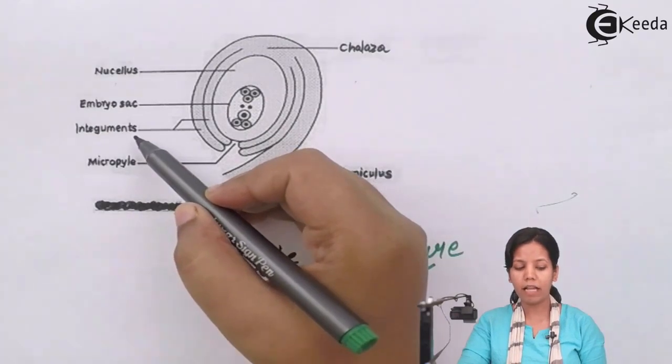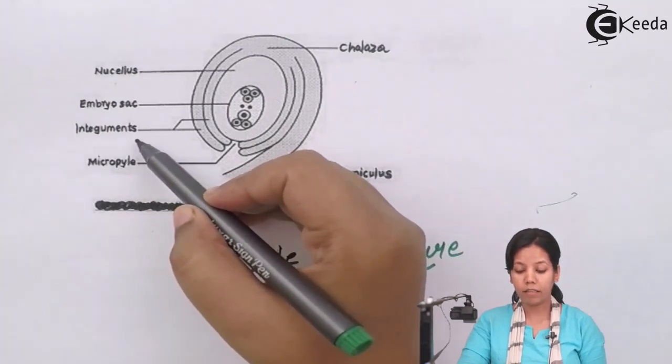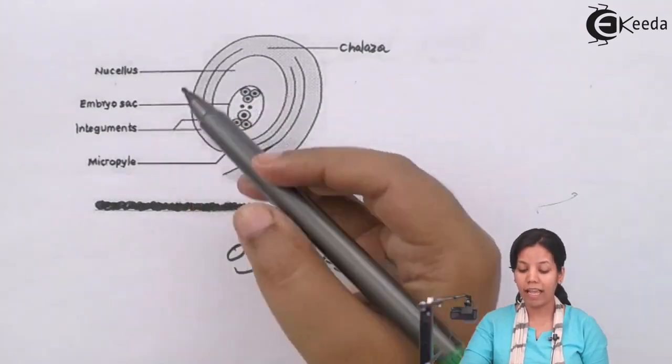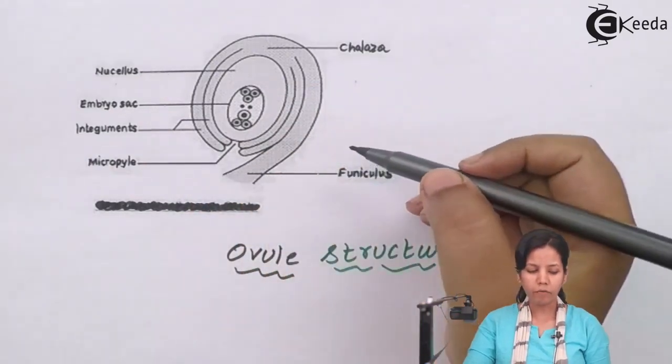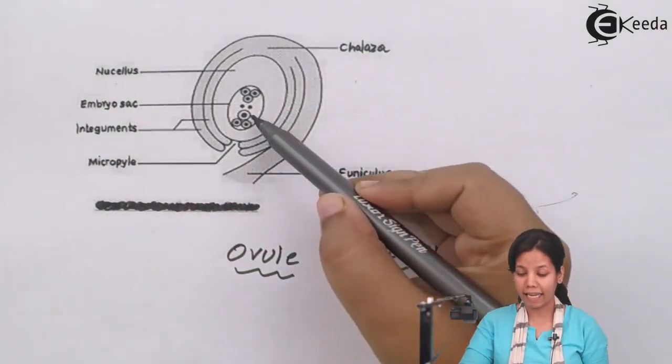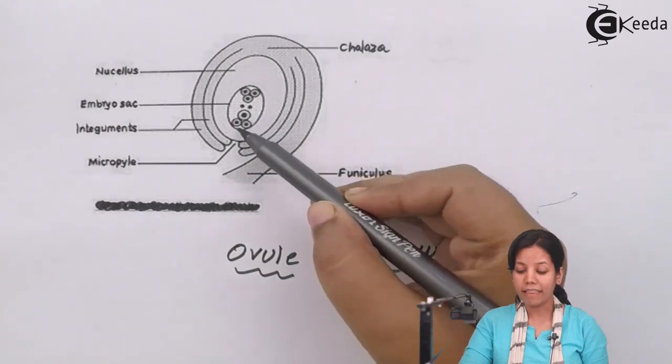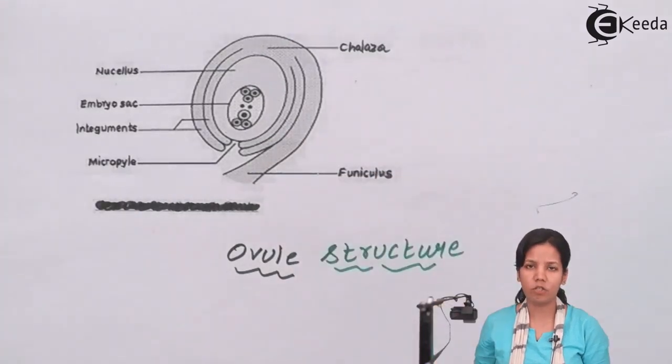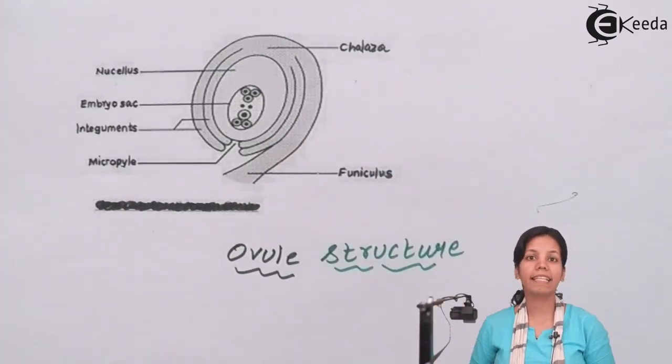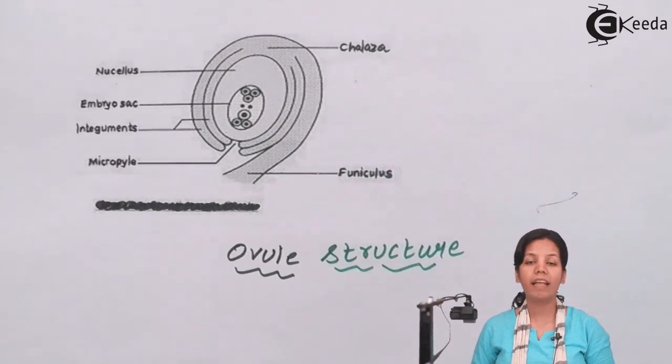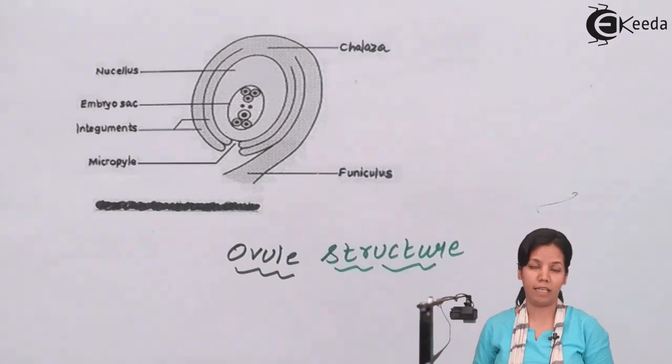Integuments protect the nucellus as well as the embryo sac. Now apart from this there is the egg cell. There are antipodal cells and synergid cells. Antipodal cells and synergid cells basically are accessory cells and in some way they provide protection to the egg cell.